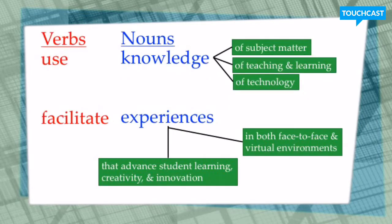Here is this standard deconstructed. Our verbs are use and facilitate. Our nouns are knowledge and experiences. We're expected to use knowledge and we're expected to facilitate experiences. That makes more sense, but what are we using knowledge of?